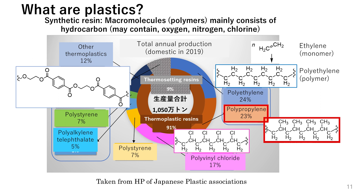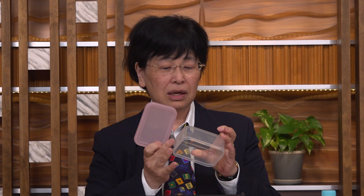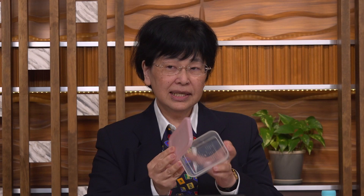Polypropylene has one methyl group connected to the polyethylene CH2-CH2 chain. Compared to polyethylene, polypropylene has higher strength. I've brought some here — this is a food container. The main container, made of polypropylene, can be microwaved. On the other hand, the lid, which is a bit softer, is made of polyethylene. When microwaving, it's a good practice to loosen the lid slightly or remove it. It's important to differentiate between polyethylene and polypropylene and use them appropriately.